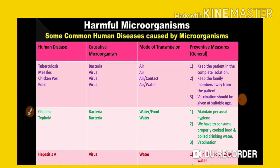Both diseases are caused by viruses but different kinds. Chickenpox is caused by the varicella virus, and smallpox is caused by the variola virus. The mode of attack is through air, water, or contact. The difference is that smallpox attacks the whole body while chickenpox attacks only some parts. Measles is similar but the entire skin begins rashing with red appearances.